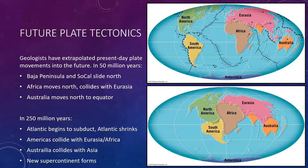If Africa maintains its northward path, it will continue to collide with Eurasia. The result will be the closing of the Mediterranean Sea — the last remnant of a once-vast ocean called the Tethys Ocean — and the initiation of another major mountain-building episode. Australia will be astride the equator and, along with New Guinea, will be on a collision course with Asia. Meanwhile, North and South America will begin to separate, while the Atlantic and Indian oceans will continue to grow at the expense of the Pacific Ocean.